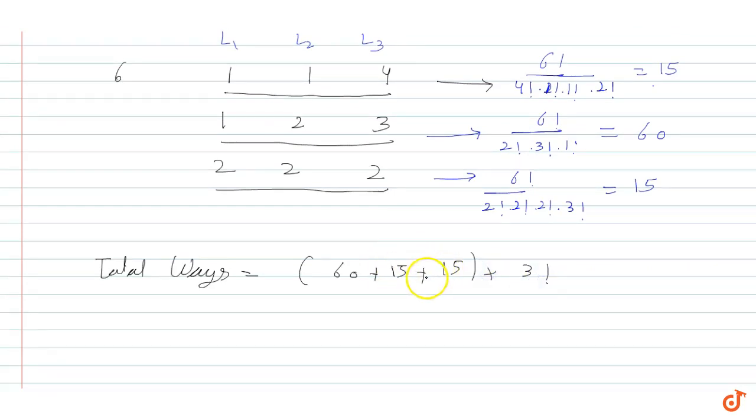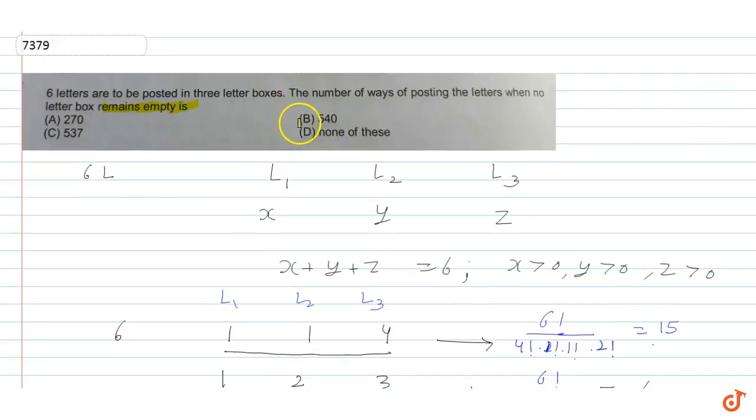So fifteen plus fifteen is thirty, and thirty plus sixty is ninety. Ninety into three factorial is ninety into six, which equals five-forty. So total five-forty ways we can distribute letters in three letterboxes. So correct answer is option B.